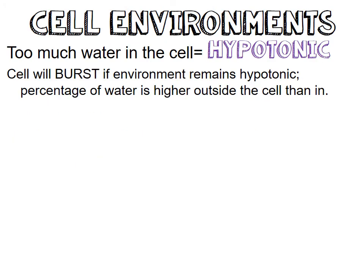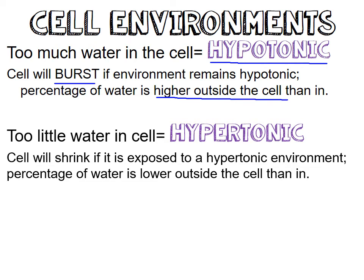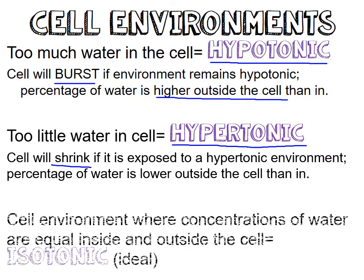Now let's talk about different environments that will affect the cell. If there is too much water in the cell, it is said to be hypotonic, and the cell will burst if the environment remains hypotonic — the percentage of water is higher outside than inside the cell. If there's too little water in the cell, the cell is hypertonic, and the cell will shrink if exposed to a hypertonic environment. A cell environment where the concentration of water is equal inside and outside is called isotonic, and that's the ideal environment for our cell.